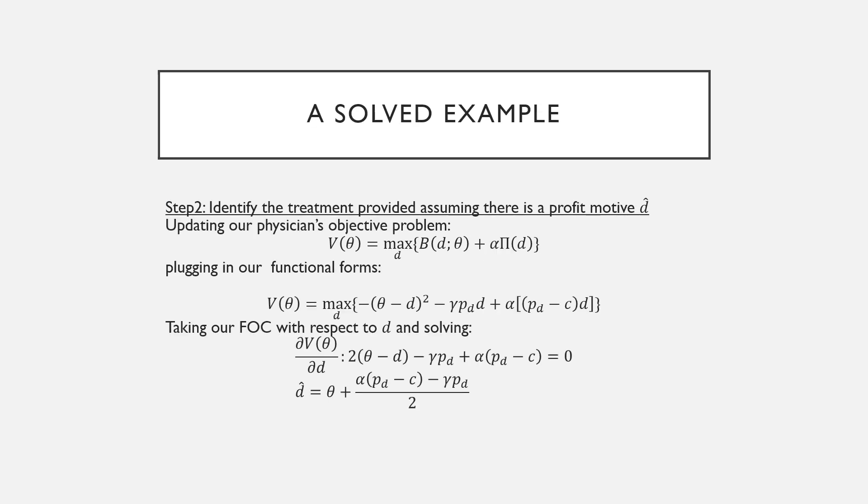Next we're going to identify the treatment provided assuming there is a profit motive. This is just taking our value function initially stated, plugging in our functional forms and solving again. In this case D hat is equal to θ plus α(P_d minus c) all over two minus γP_d all over two.